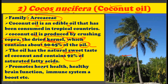Coconut oil has certain applications: it promotes heart health, healthy brain function, and immune system boosting. So coconut oil comes from the plant Cocos nucifera, belonging to the family Arecaceae. It is an edible oil consumed in tropical countries, obtained from the kernel part of the fruit which contains 60 to 65% oil. This coconut oil contains 92% saturated fatty acids, which promotes healthy heart function, brain function, and boosts the immune system.